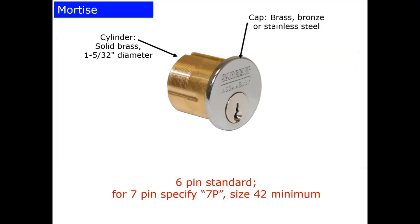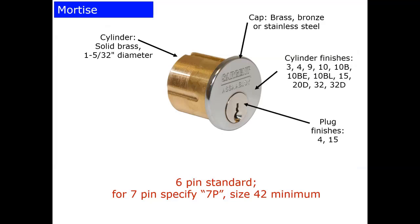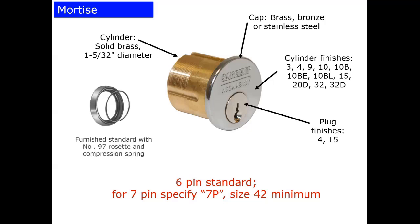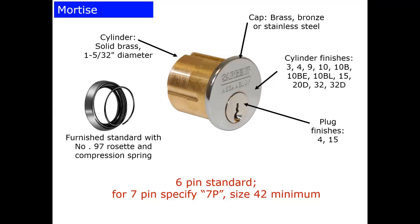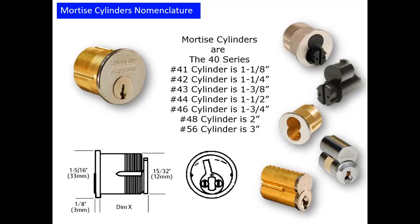Here's our standard mortise cylinder — solid six pin. We put a cap on that cylinder. So when you order an X device that's stainless steel 32D, your cylinder will also be 32D. Even though the body's brass, the cap will be stainless steel. We offer many finishes. The plugs are either US-4 or US-15, and six pin is standard for mortise cylinders, yet we do make a longer version — size 42 — which would be a seven pin cylinder. They're all packed with a number 97 collar standard, and the model number 41, or 40 series, represents the length of the cylinder: 41 is inch and an eighth, 42 inch and a quarter, and so on.